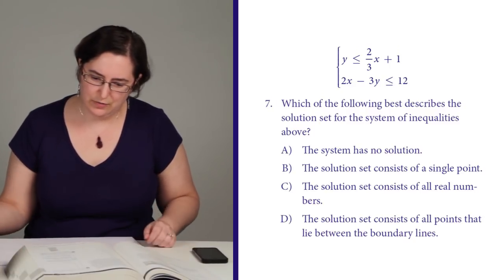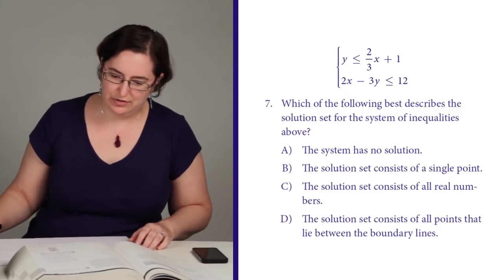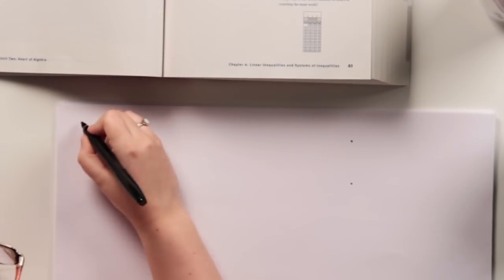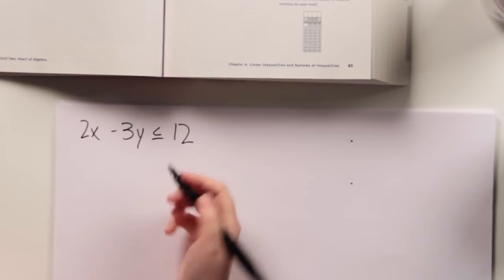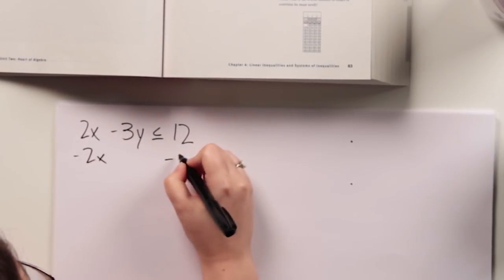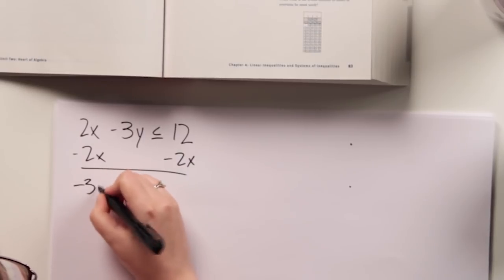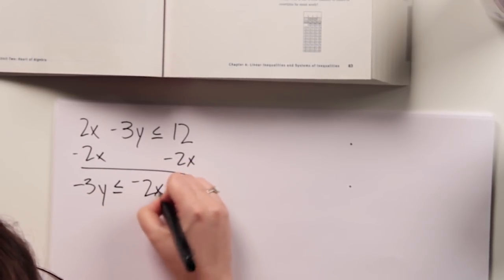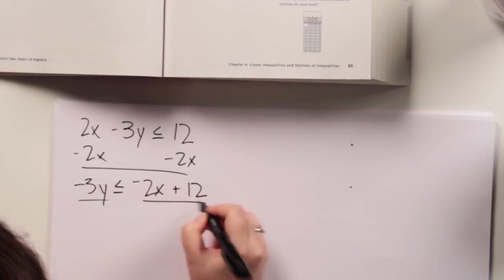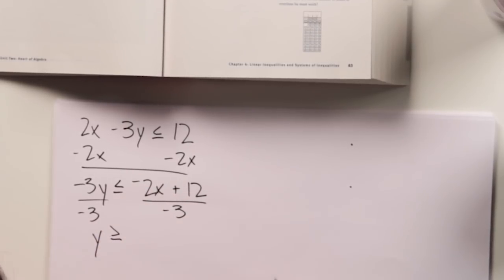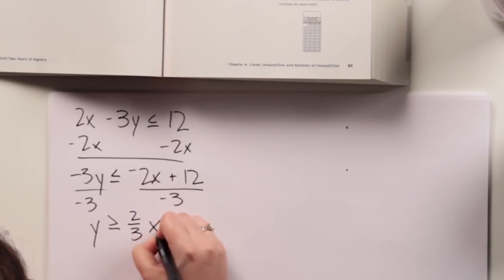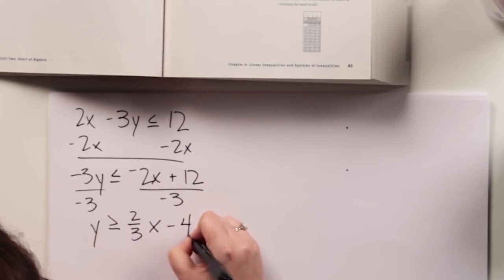I'm gonna put the second one into my y equals mx plus b form, so 2x minus 3y is less than or equal to 12. So I subtract my 2x on both sides, get negative 3y is less than or equal to negative 2x plus 12, and then I divide everything by negative 3, and then of course I have to switch my inequality sign, and I get 2/3x minus 4.